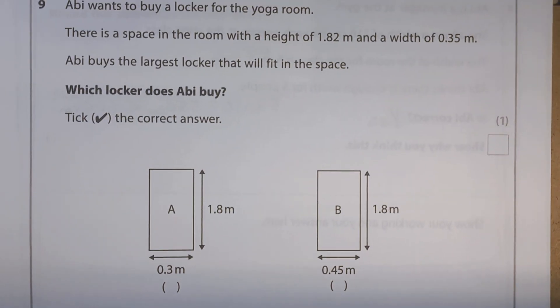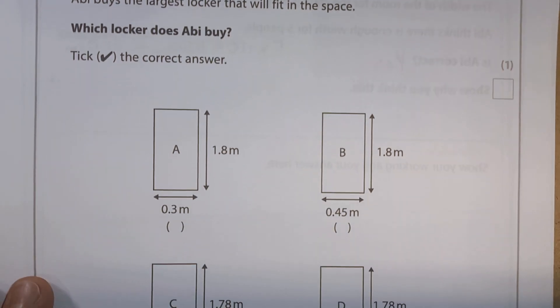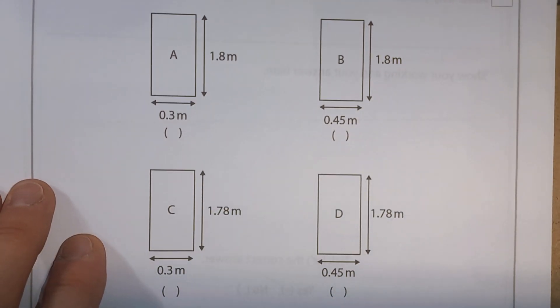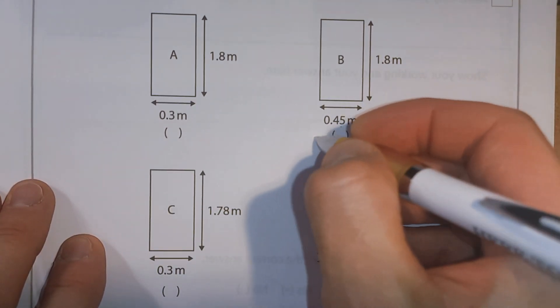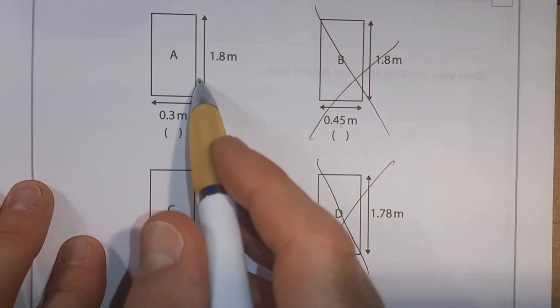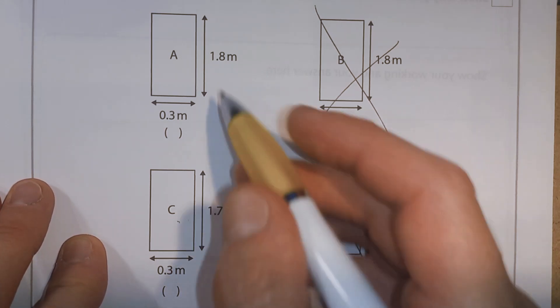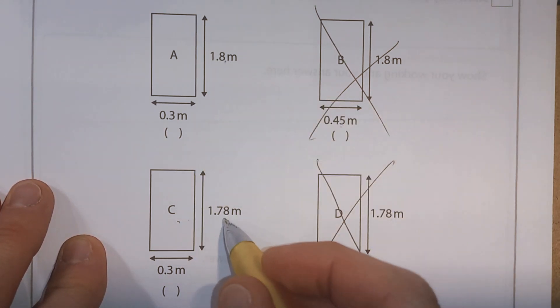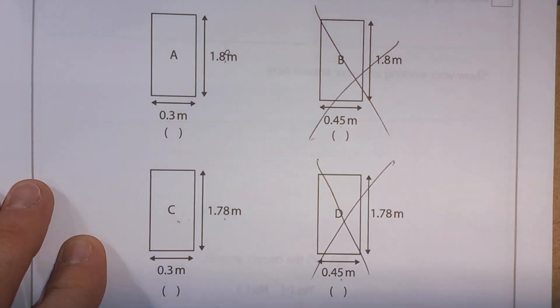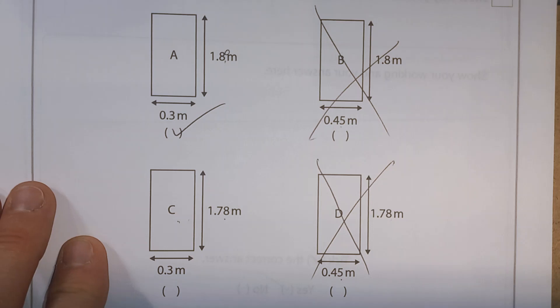But the width, the space has got a width of 0.35. So we can't have anything that's more than 0.35. So this one is too big. And this one, 0.45, that's too big as well. So it's going to have to be one of these two. And she wants the largest one that will fit. Well, 1.8 is bigger than 1.78. You can think of that as like 1.80. So that's the one we need.